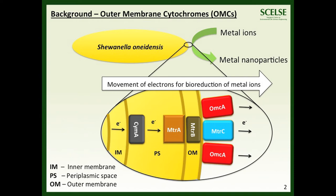The extracellular electron transport chains responsible for transferring electrons across cell membranes are relatively well characterised. In particular, Outer Membrane C-Type Cytochromes MtrC and OmcA.